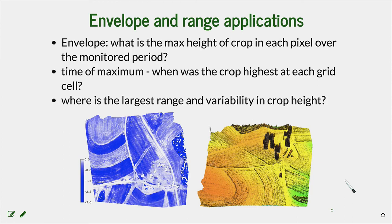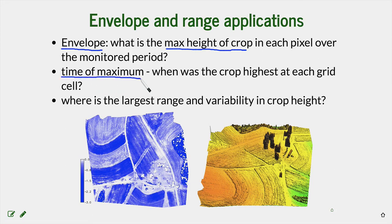With the core and envelope surfaces you can ask different questions. With the envelope — the maximum elevation measured in the time series — you can ask what the maximum crop height is in each grid cell over time. You can identify areas that consistently grow higher crop or areas where growth is consistently low. You can also compute the time of maximum, meaning when the crop was highest at each grid cell, and examine whether there is temporal variability or whether maximum height occurs during the same survey.